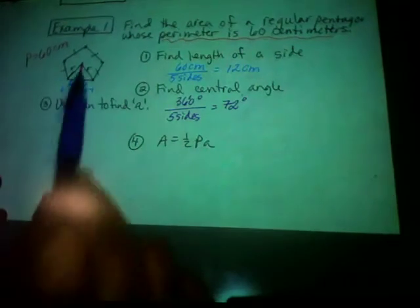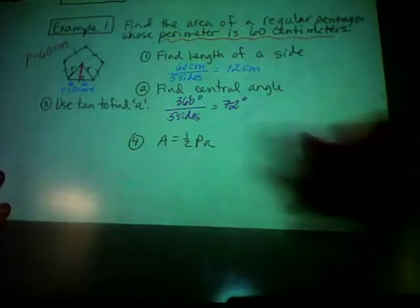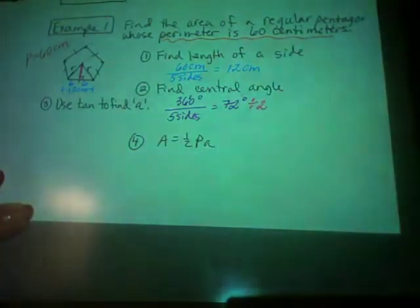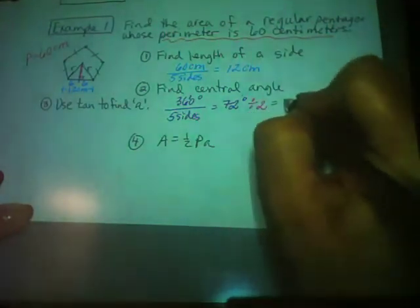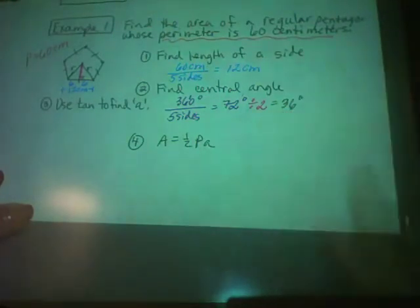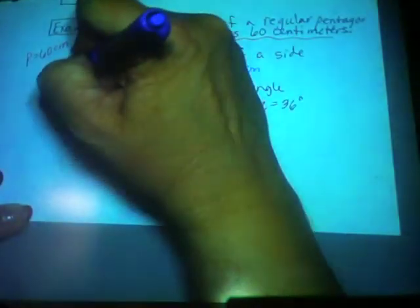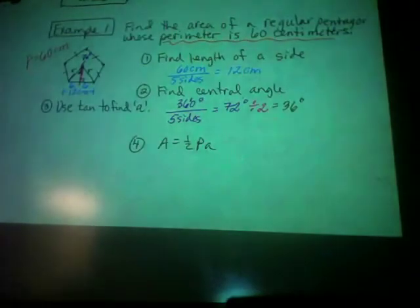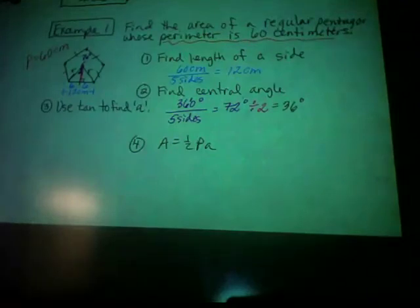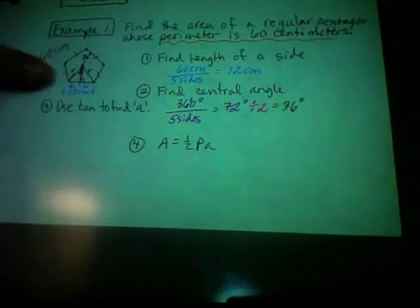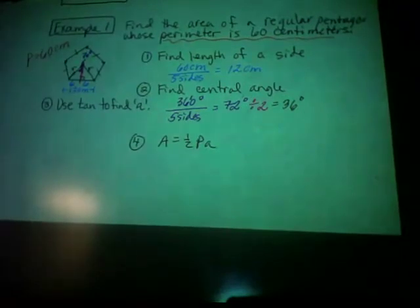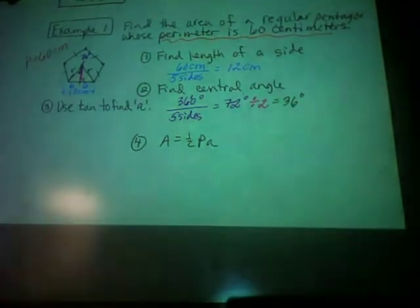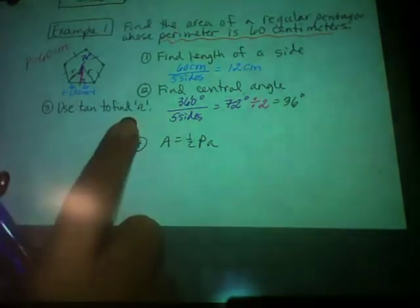The apothem bisects the central angle, giving 36 degrees. Redrawing the triangle: we have 6 cm opposite the 36° angle, and apothem A is adjacent. Since we have opposite over adjacent, we use tangent: tan(36°) = 6/A. With A in the denominator, set this up as a proportion and cross-multiply: A × tan(36°) = 6.